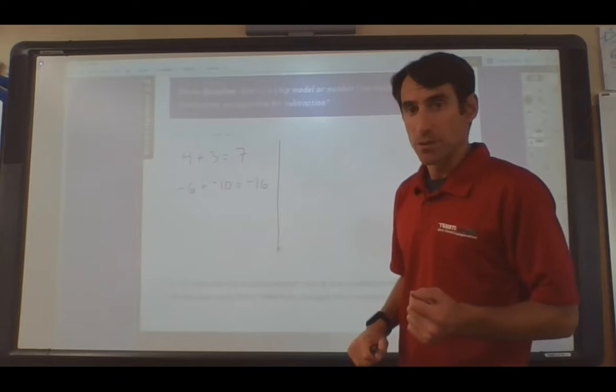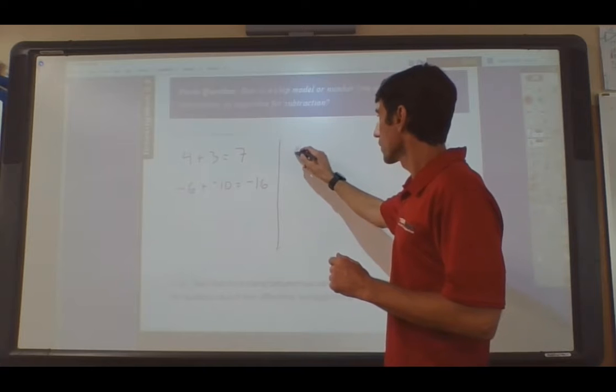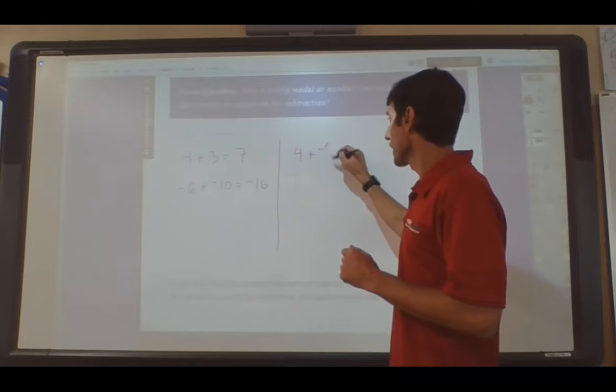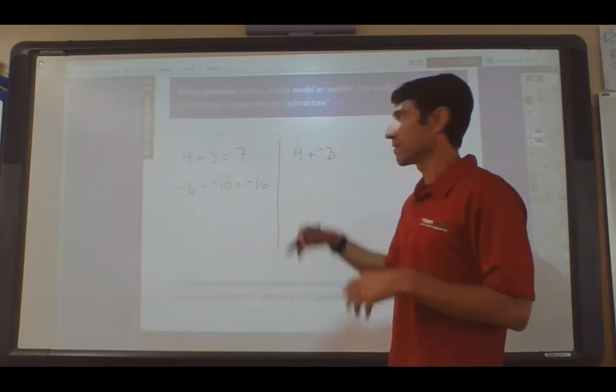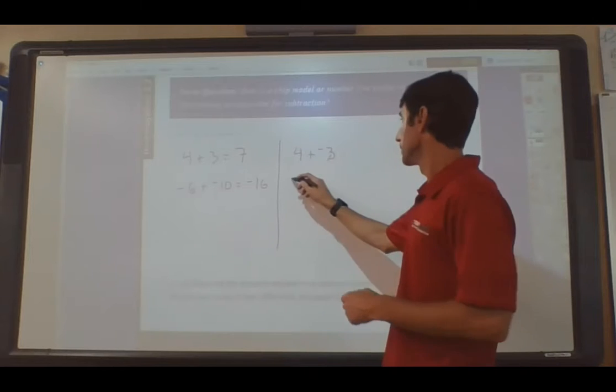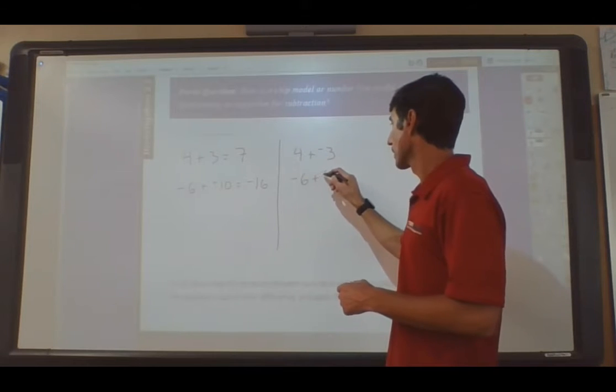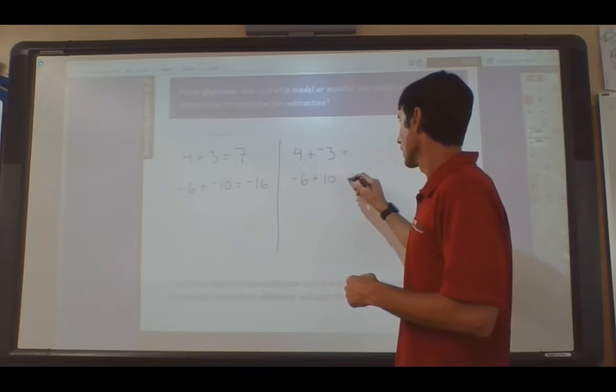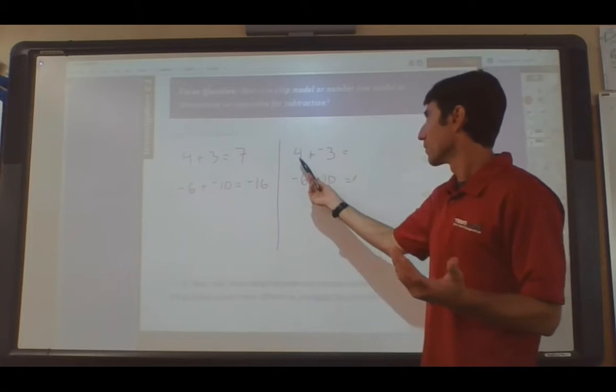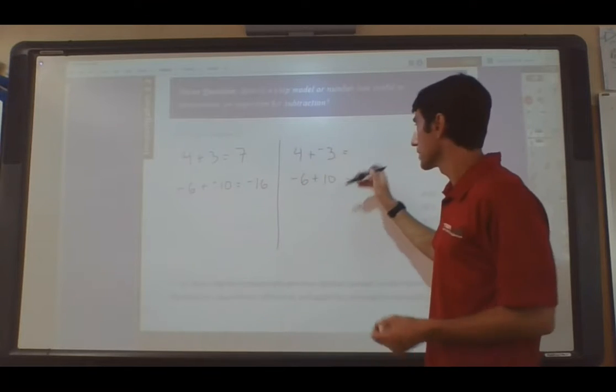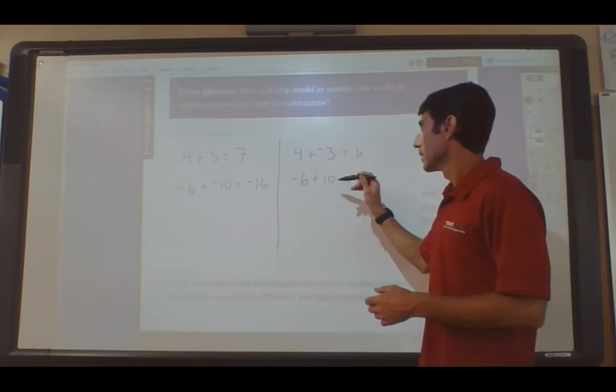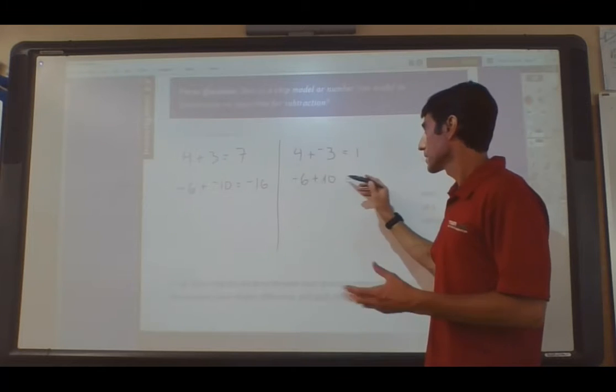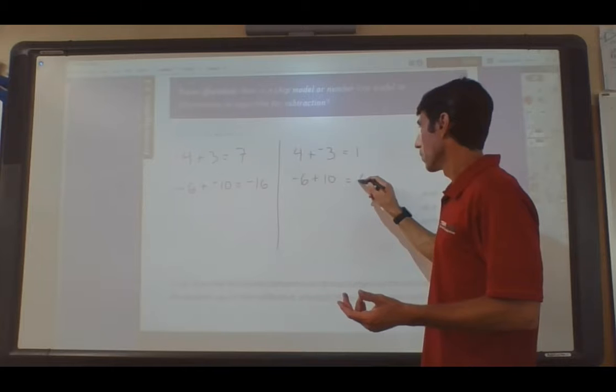Our second algorithm was dealing with when we have addition, and the numbers are, in fact, different. We have 4 plus negative 3. We found that to be 1. Negative 6 plus 10. We found that to be 4.